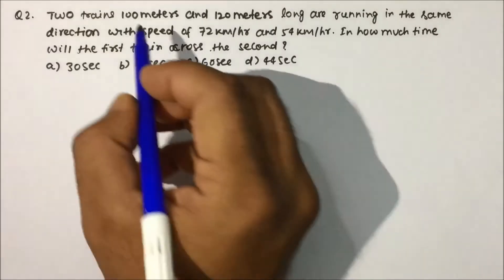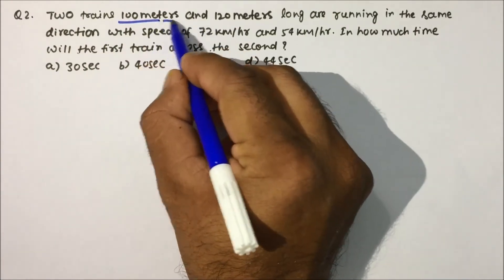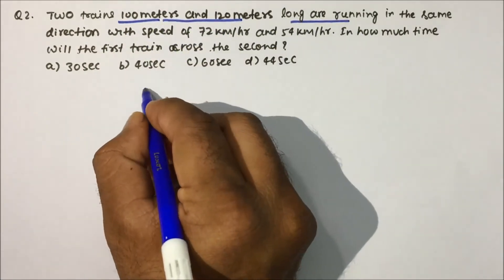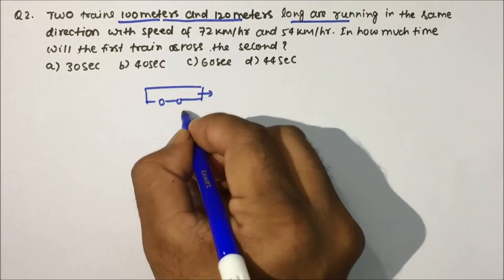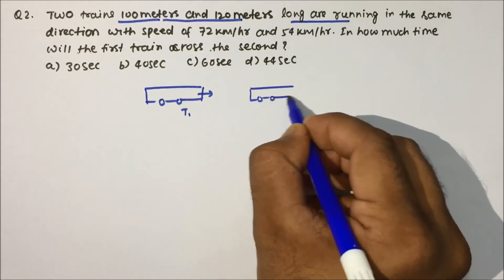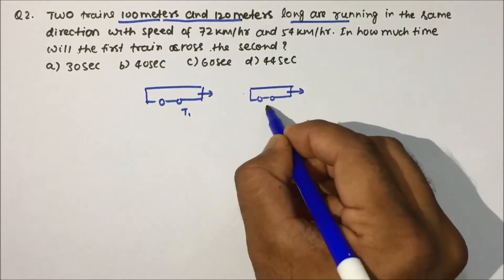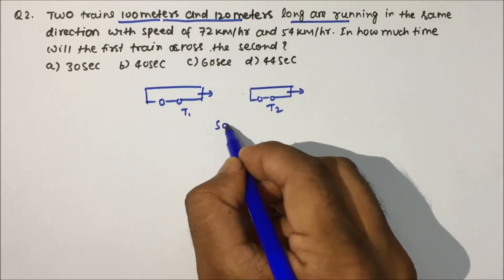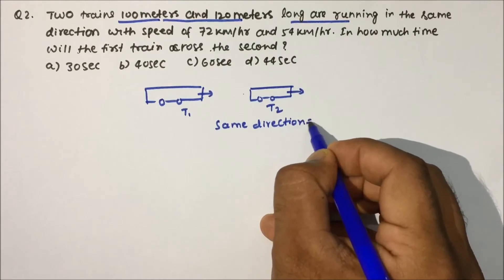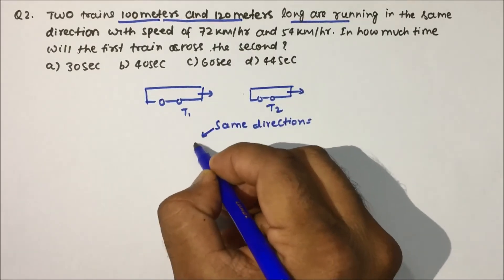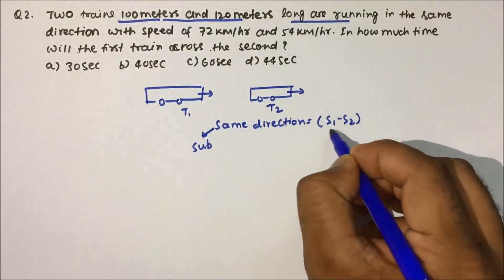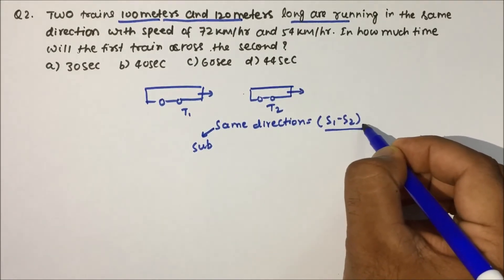Question number 2: Two trains, 100 meters and 120 meters long, are running in the same direction. Suppose this is train 1 and this is train 2 — they are running in the same direction. In the same direction, the speeds get subtracted, because 'S for Same and S for Subtract'.